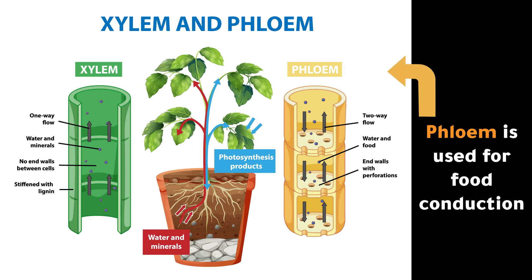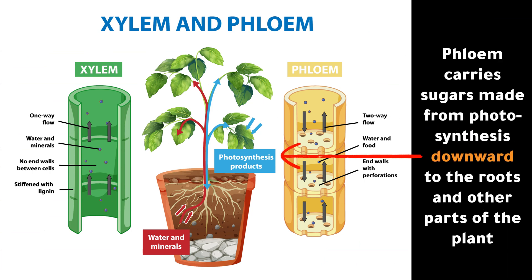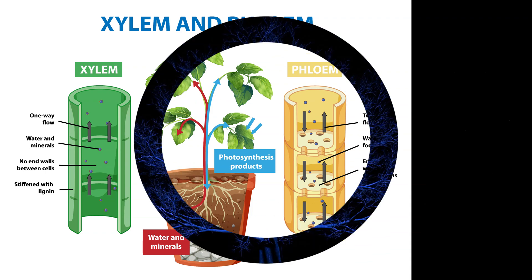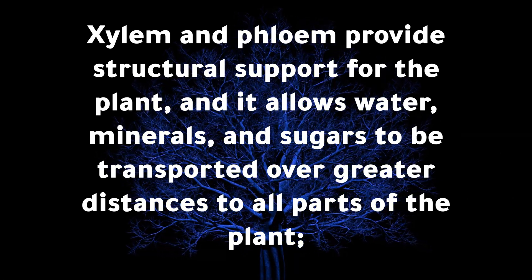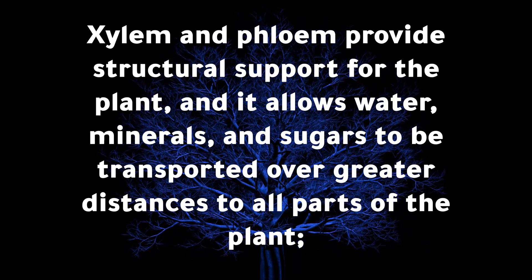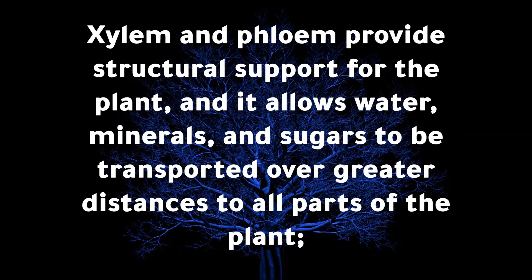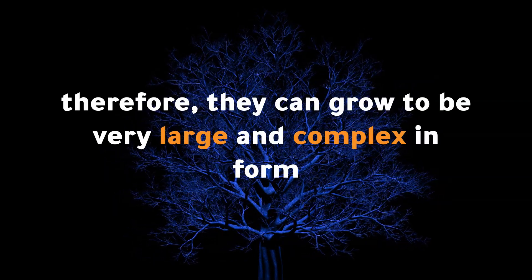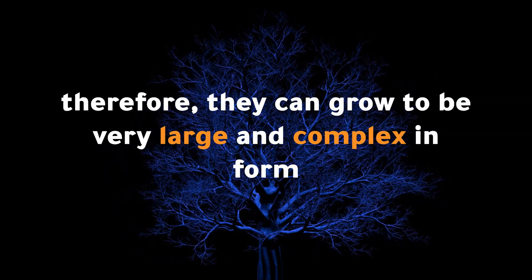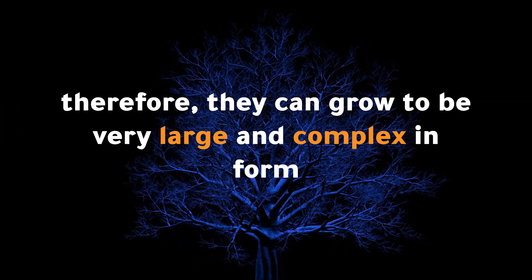Phloem is used for food conduction. Phloem carries sugars made from photosynthesis downward to the roots and other parts of the plant. Xylem and phloem provide structural support for the plant, and they allow water, minerals, and sugars to be transported over greater distances to all parts of the plant. Therefore, vascular plants can grow to be very large and complex in form.